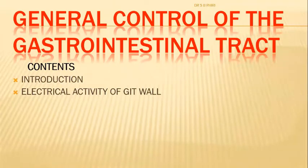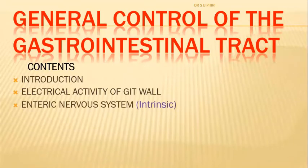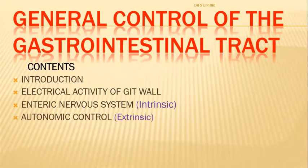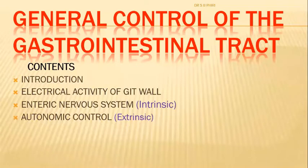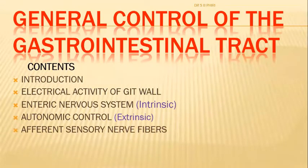The GIT is called the second brain of the body because it has its own nervous supply. We'll look at the enteric nervous system, the autonomic control as the extrinsic system, and how the autonomic nervous system controls the intrinsic nervous system. We'll also look at afferent sensory nerve fibers - receptors in the mucosa communicating with sensory nerve fibers.